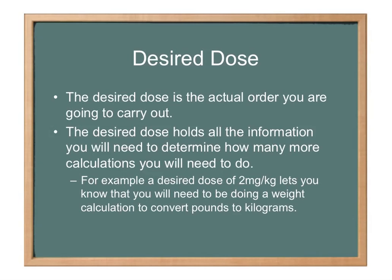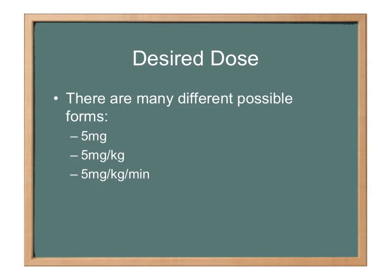To give you an example of how the desired dose helps you: if you see a dose that's 2 mg per kg, that lets you know you're going to need to convert the patient's weight from pounds into kilograms to be able to deliver that dose. That is a weight-based dose because it's per kg. Not all dosages are. There are many different possible forms for a desired dose — you could have 5 mg, or 5 mg per kg, or 5 mg per kg per minute. Obviously, as we go down the line, it gets more difficult to calculate those dosages.